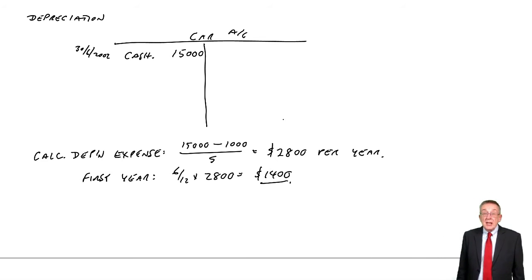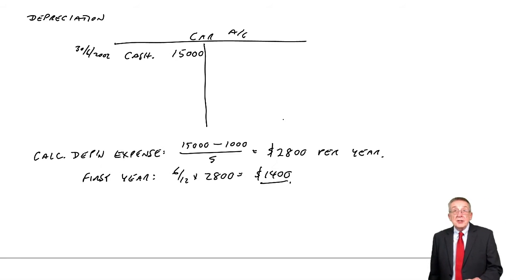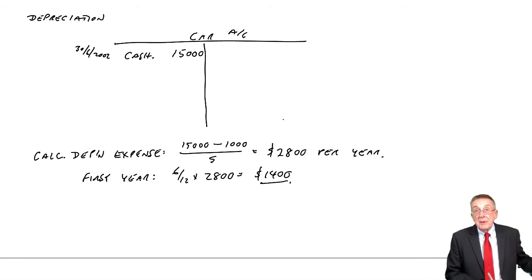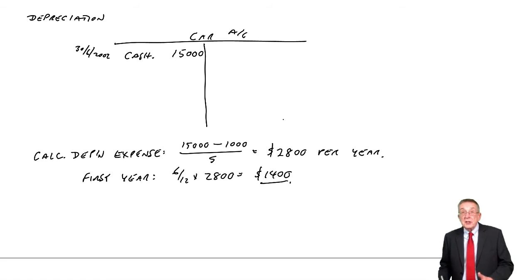But remember, I did say in the earlier lecture, look out for that statement that could have been there. If it had said a full year's charge in the year of purchase, it would have been 2,800. Here it didn't, so we pro rata. It'll be 1,400 in the first year. But in future years, when we've had it all year, it'll be the full 2,800.